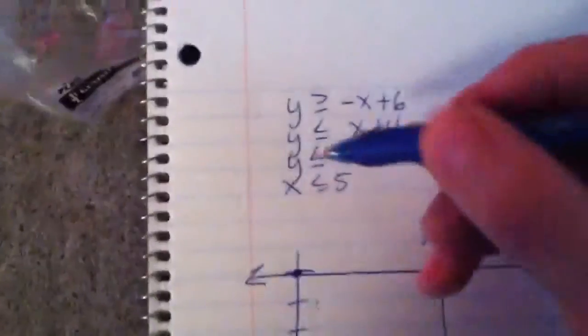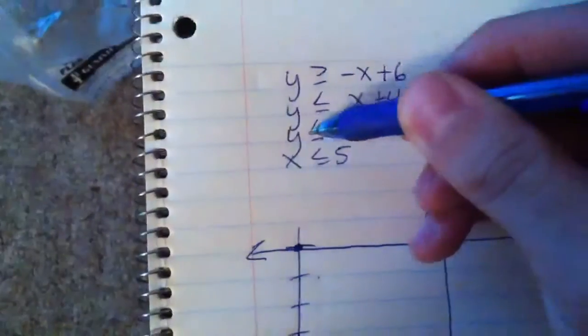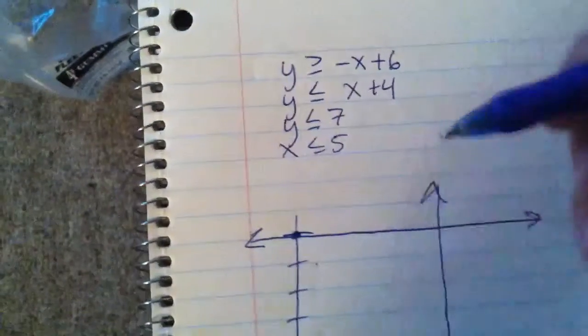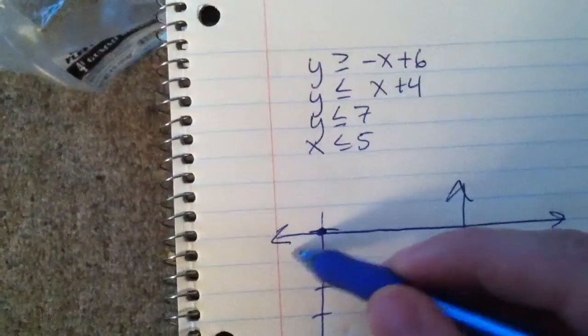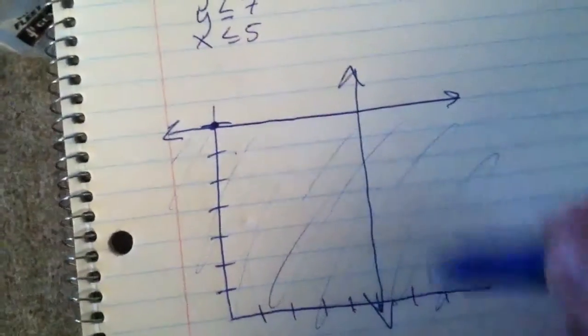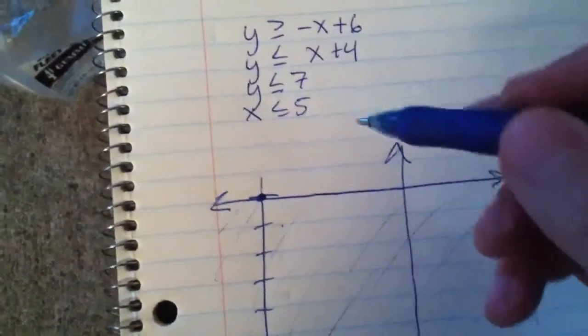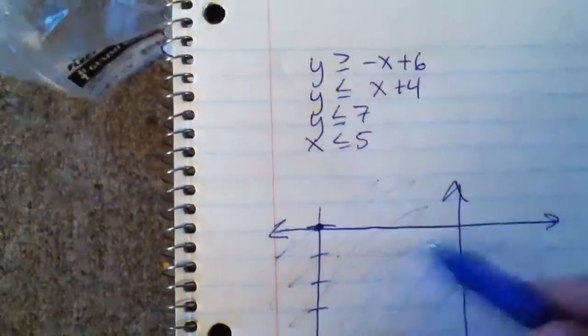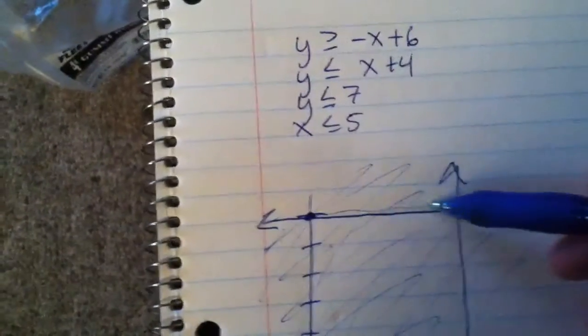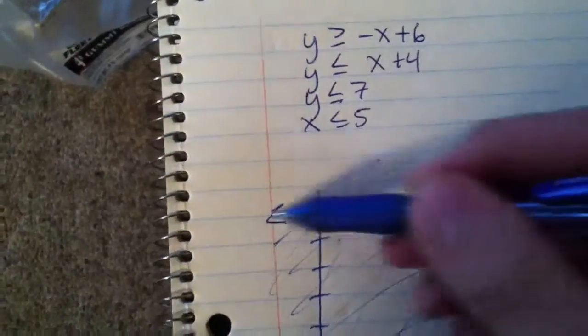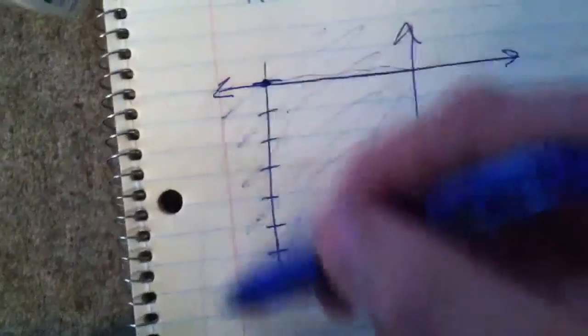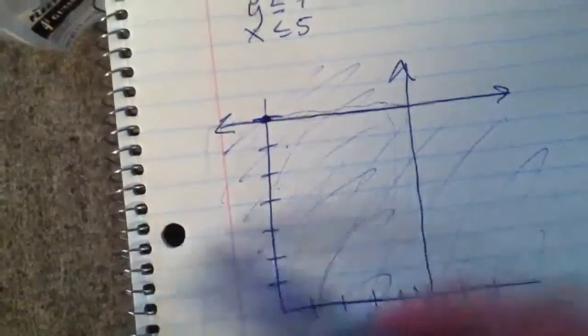Next, we can shade these two. These are easy. The less than means down and to the left, whichever one you're going. So less than 7 means everything down here, down there, everything below that line. Less than 5 means everything to the left over here. So right now our box is down here. Anything in these quadrants, and this keeps going forever.